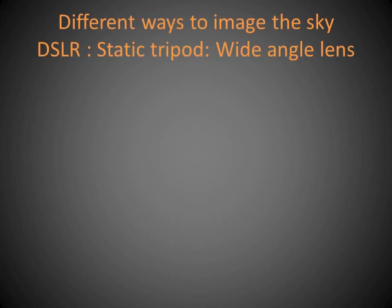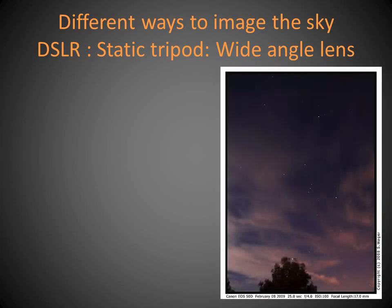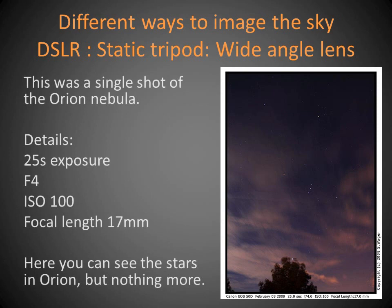Here are a couple of examples of different ways to image the sky. This is with a DSLR, a static tripod, and a wide angle lens — a single shot of the Orion Nebula. You can see the details on screen. This was only a single shot; it wasn't even done with stacking or anything, so this really is about as basic as you can get.